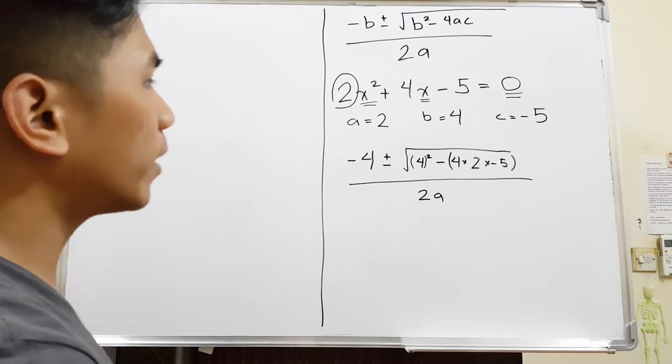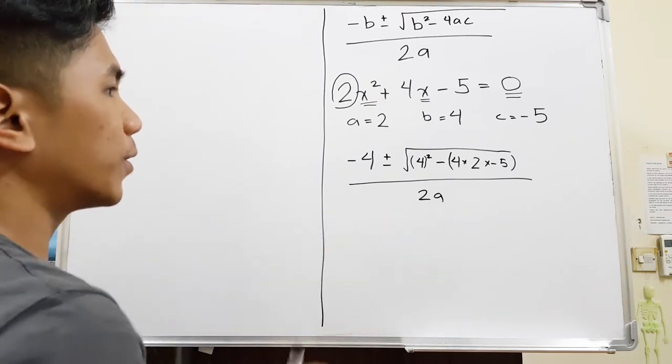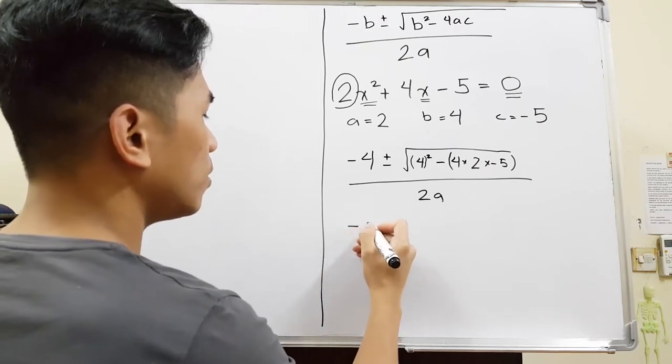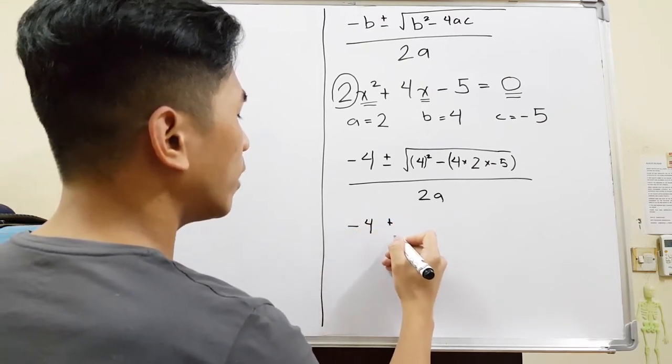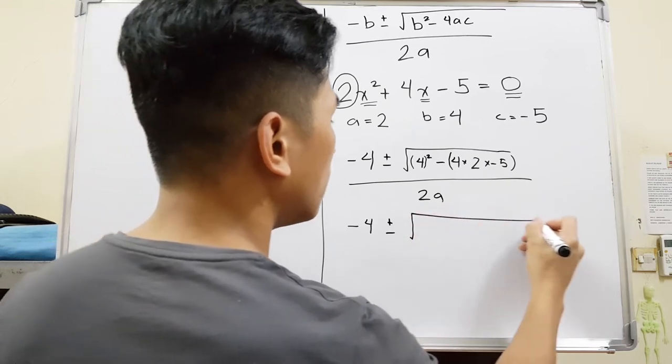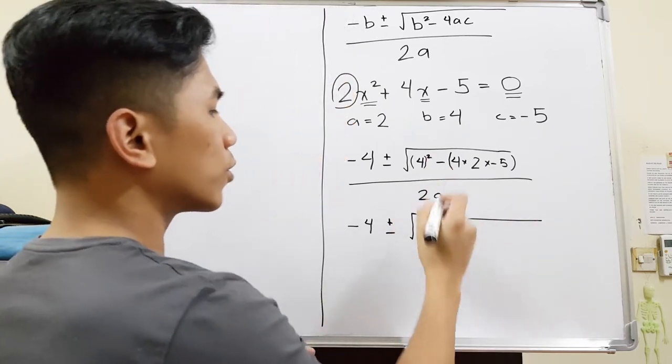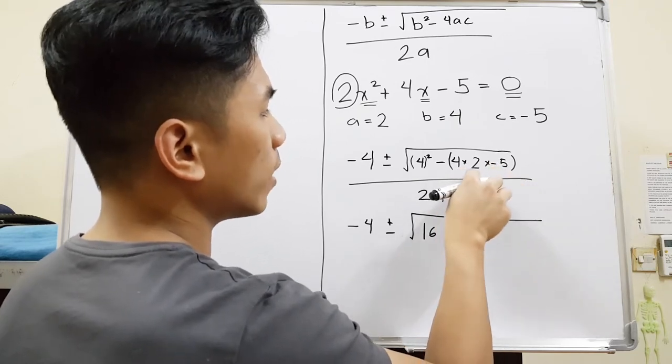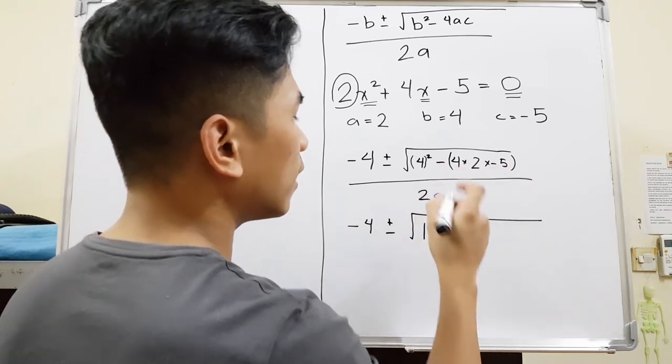Now, for those who are not allowed to use a calculator or who need to simplify this further, this is what we're going to be doing. Continue simplifying one by one. You can simplify them at the same time, but I will do it slowly. So 4 squared is 16, and then 4 times 2 times negative 5, so 8 times 5 which is 40, and then negative here.